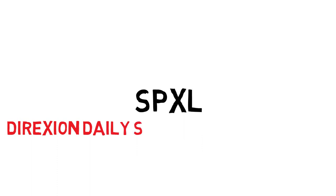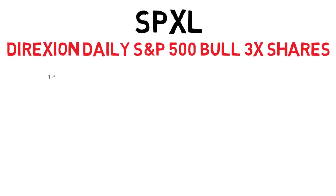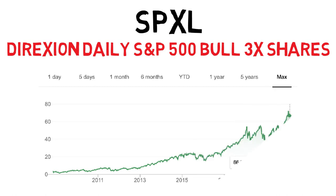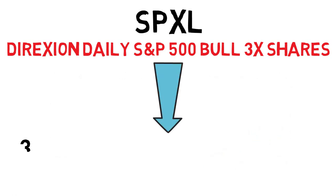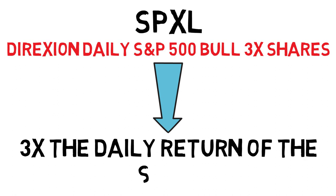SPXL stands out though. The infamous Direxion Daily S&P 500 Bull 3x ETF is probably the most famous 3x ETF in this family. If you look at the 10-year chart, the results are astonishing and hard to argue against. For investors, this ETF seems like a no-brainer. In theory, its objective is quite simple: seeking to replicate the daily investment results 300% of the daily performance of the S&P 500.